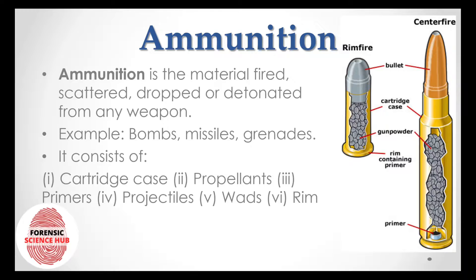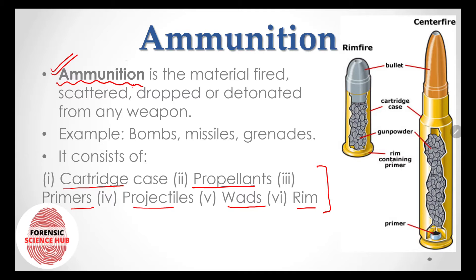Ammunition is the material that is fired, scattered, dropped, or detonated from any weapon. Generally in layman's terms we think that the bullet is the one that is fired, but in scientific terms it is ammunition. Ammunition contains the bullet along with many other materials. Examples of ammunition also include bombs, missiles, and grenades, as these can also be fired, scattered, dropped, or detonated.